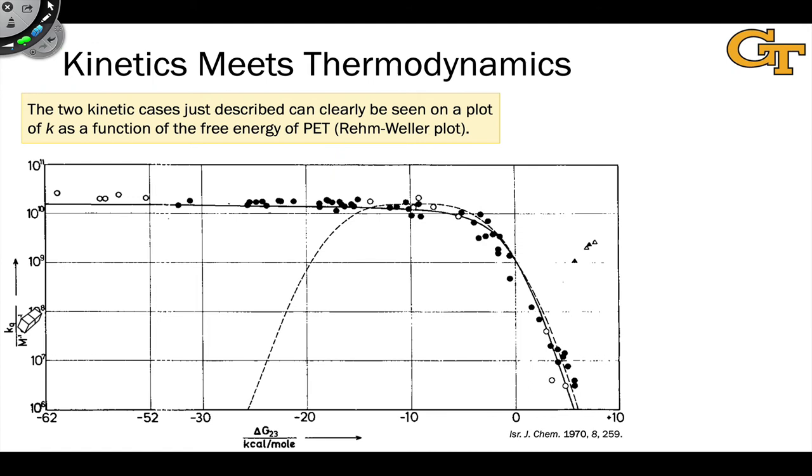At this point, we've learned how to think about the kinetics of PET as a rate constant for quenching, KQ, and the thermodynamics of PET as a delta G, a free energy change for the process. And so now what we can do is investigate the effect of the thermodynamic free energy difference on the rate of PET.